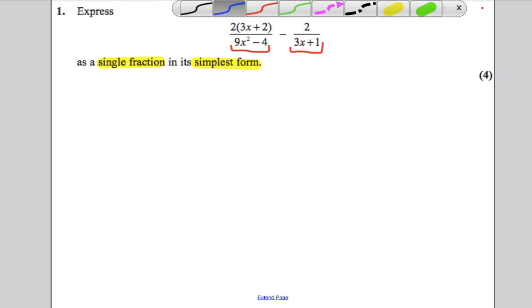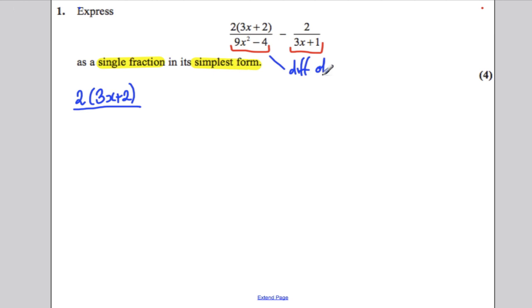The first step is to try to factorize the expression. So the top of the first fraction cannot be factorized. Can 9x squared minus 4 be factorized? Yes, it's a difference of two squares. The first of the four marks is for factorizing the denominator of this into 3x plus 2, 3x subtract 2.